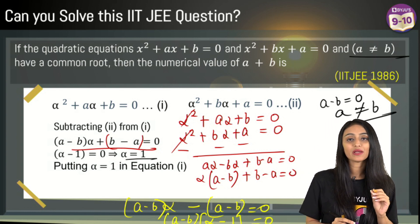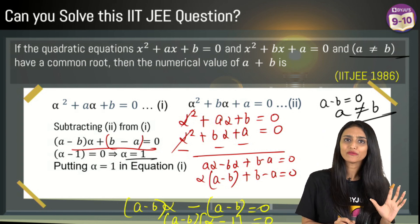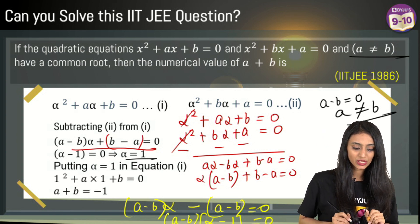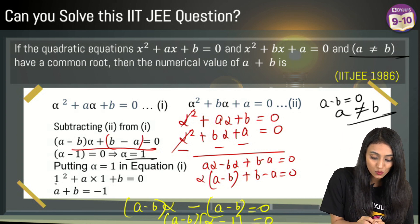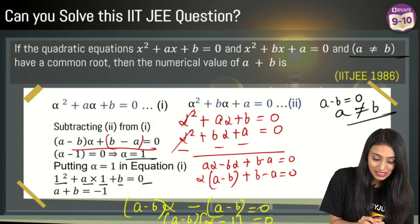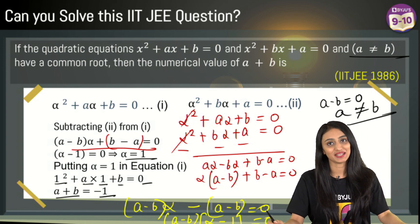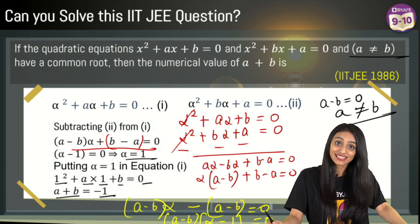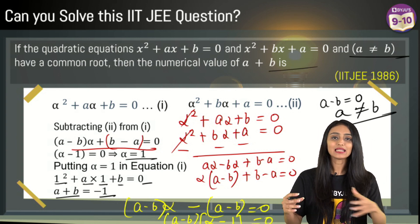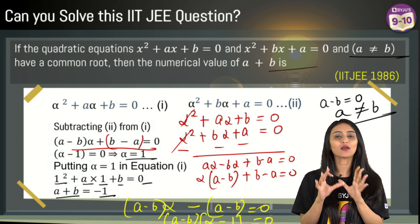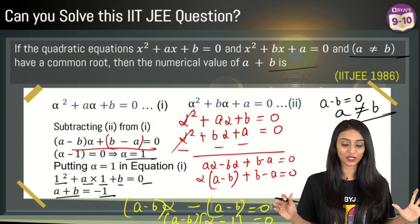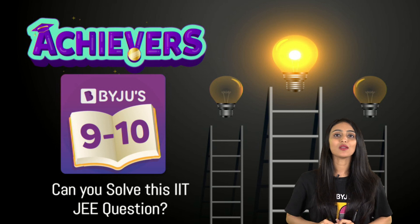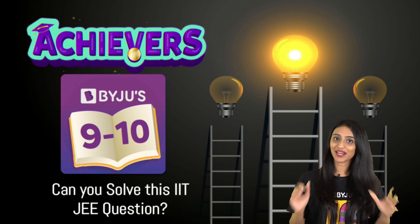Now let's suppose if I put the value of α in equation number 1, we can put in any of the equations. Let's suppose if I put in equation number 1, what do I get from here? I will have 1² + a(1) + b = 0. That means a + b would be equal to -1 and this is what we needed here. We have got the value of a + b. See, all we have done is, we have used the basic concepts that we learn in grade 10th in quadratic equations, nothing new I have done here. So do let me know in the comment section, how you like this question?